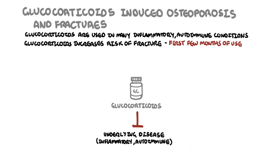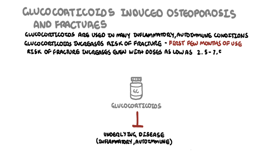In general, the risk of glucocorticoid-associated osteoporosis and fractures increases with age, dose, and duration. However, the risk of fracture with glucocorticoids increases with doses as low as 2.5 to 7.5 mg daily.